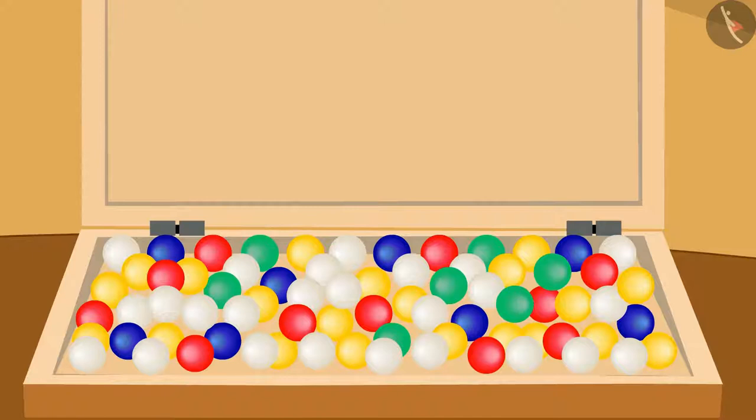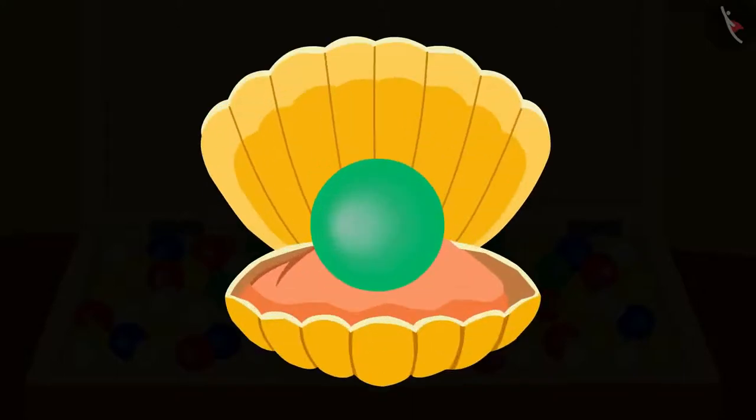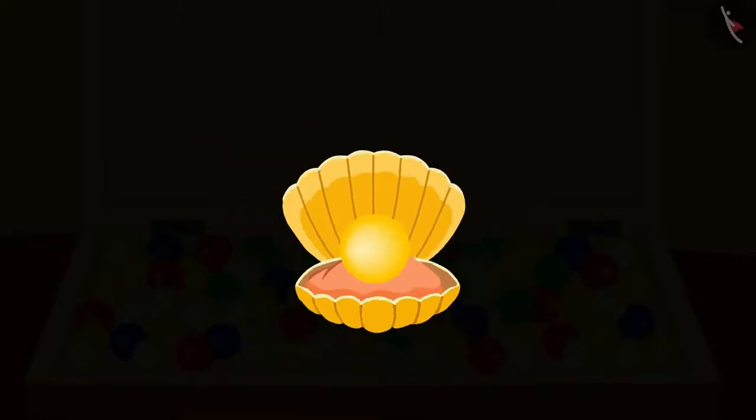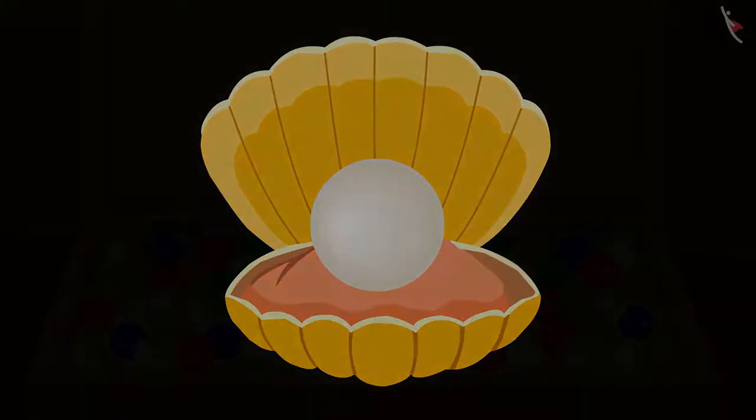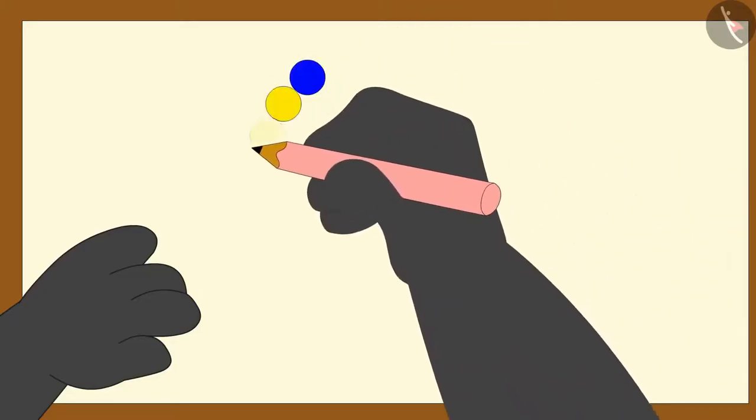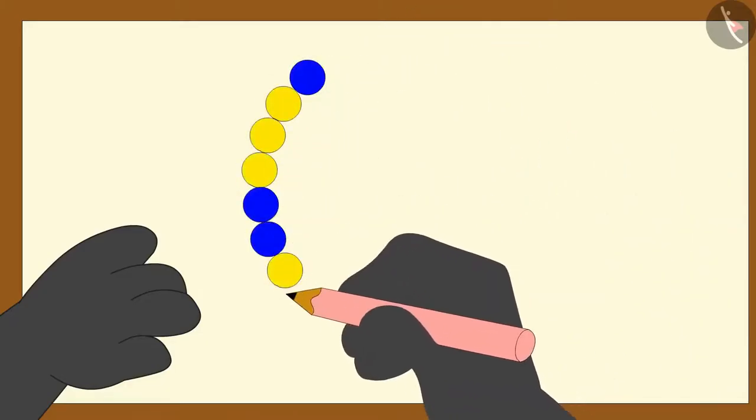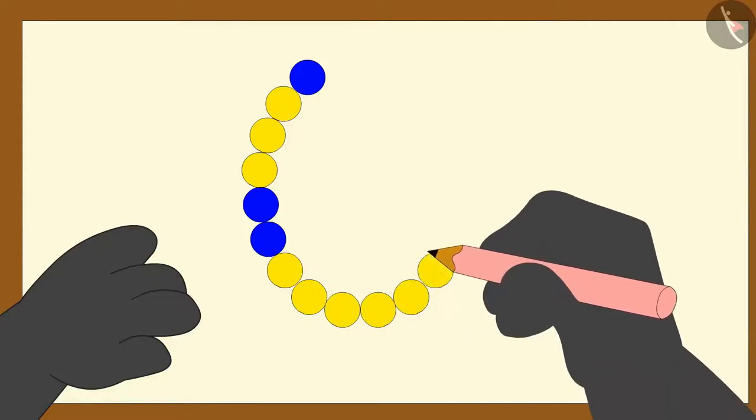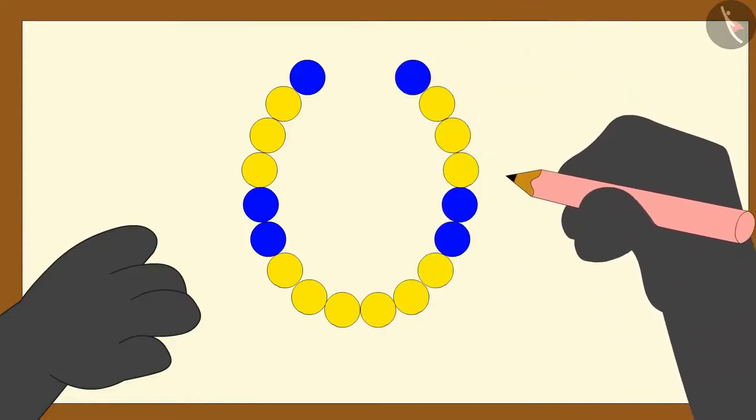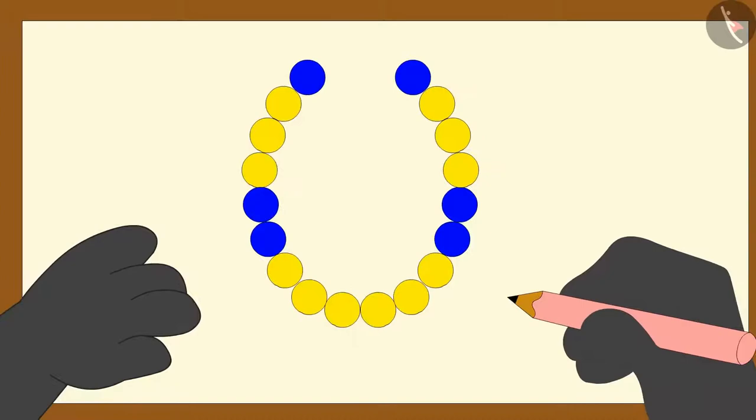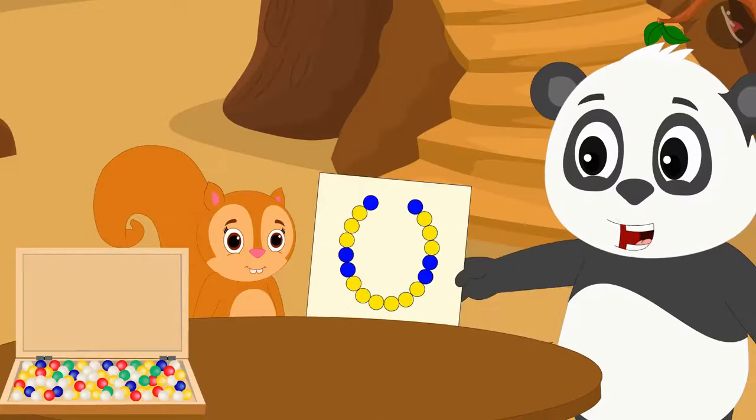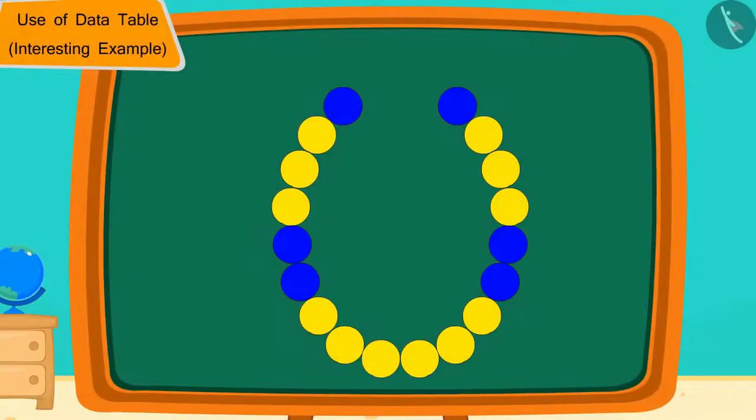Golu got very excited on seeing red, green, blue, yellow and white beads. He made a drawing of blue and yellow beads on a paper like this and said to Chanda, let's make a necklace of this design.